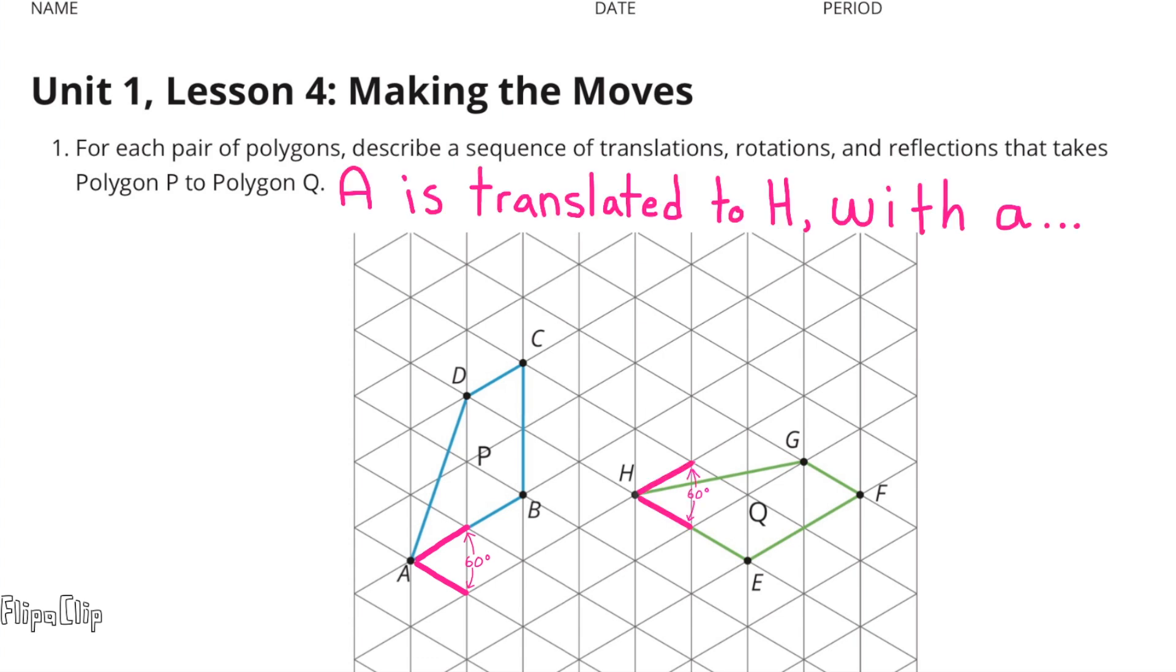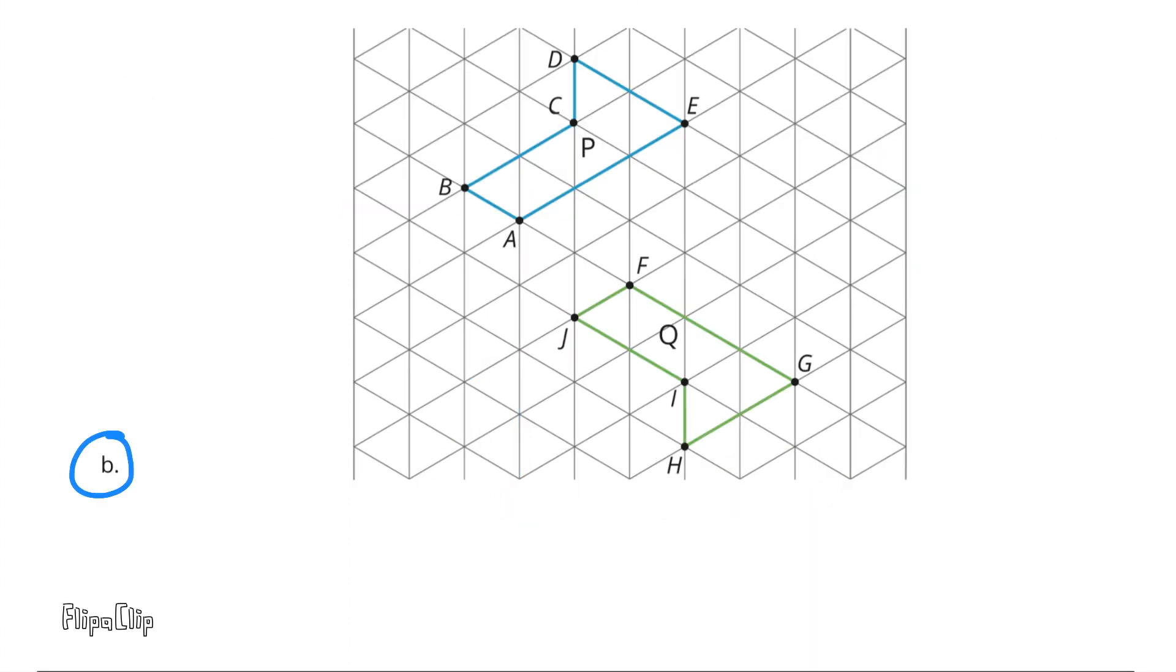A is translated to H with a 60 degree rotation, center H. B. Reflected over line AE. A is translated to F, and a 60 degree clockwise rotation with center F.